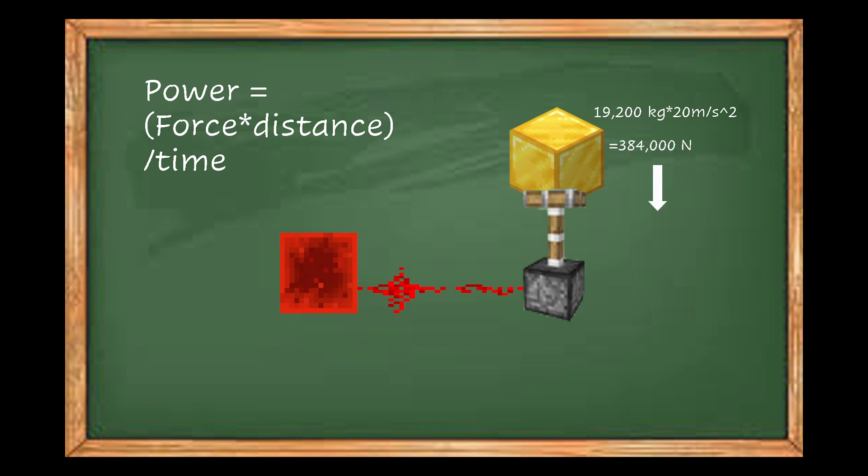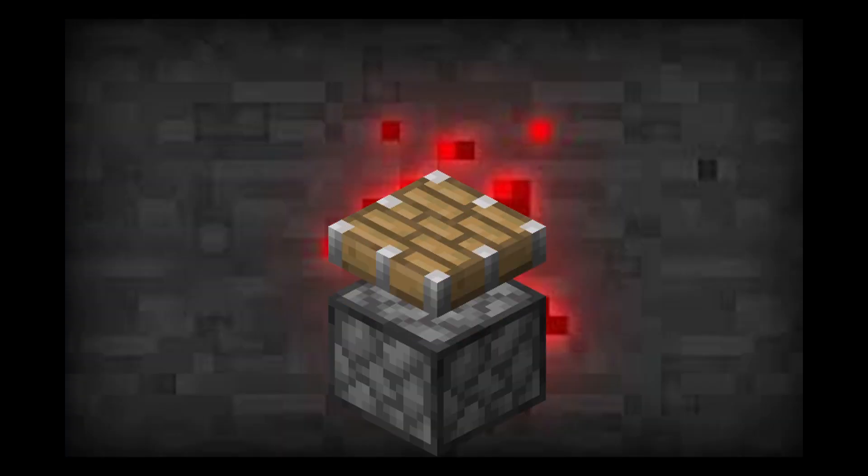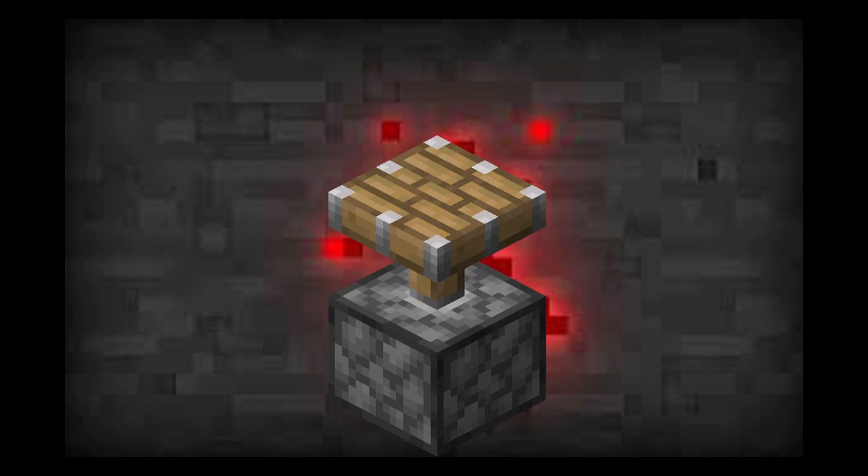Next we need the distance that this block is pushed up. It's only one block, so that's equal to one meter. The last thing we need to find is the time it takes for it to do the action. This action is fortunately completely consistent, so timing it once produces an accurate result of 0.1 seconds.